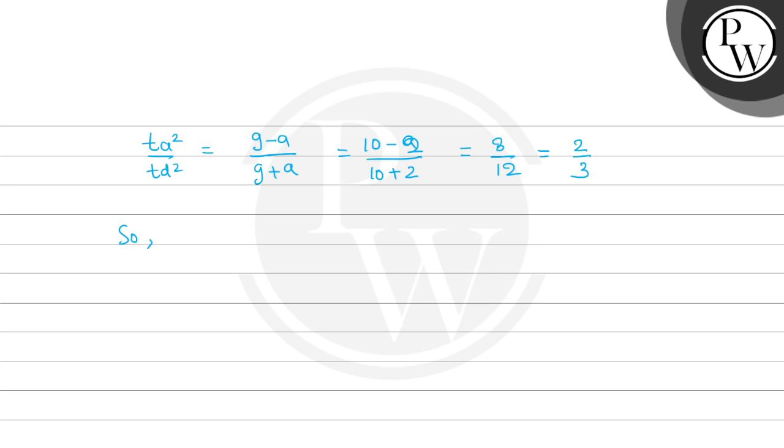So Ta divided by Td equals under root 2 by 3. Ta ratio hai, ascending time divided by descending time, which is given under root of alpha divided by beta.